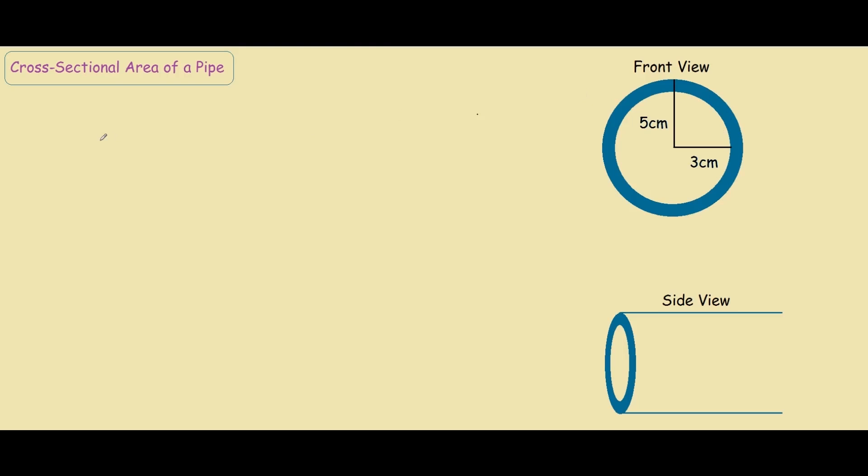So let's generate a formula. We can say that the cross sectional area of this pipe is πr², which is the area of the big circle.